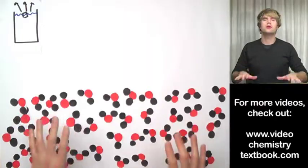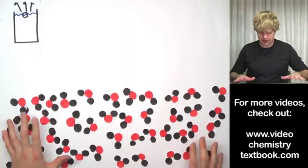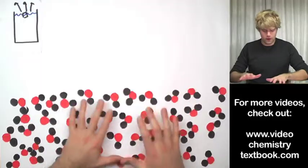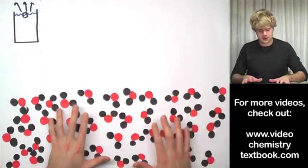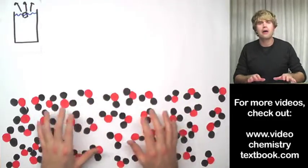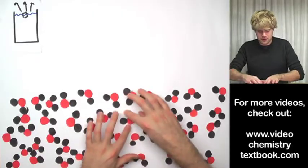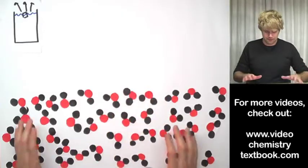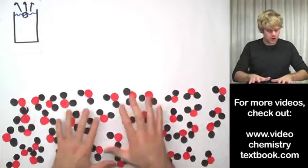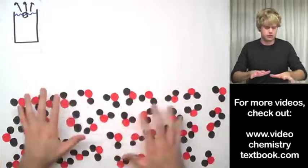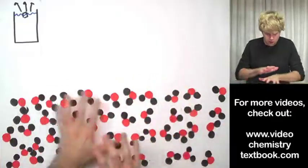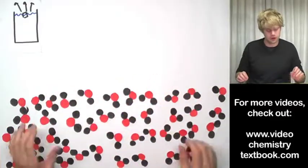Now, there's something that I can't really show with these water molecules here and that's that if we were really looking at this realistically, they'd all be moving around a little bit. They'd be jiggling around, some of them would be spinning around and turning. So imagine if you can that all of these guys here are in constant random motion, they're bumping into each other and they're all moving, swimming around and jiggling around.